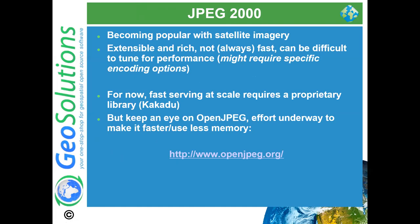JPEG 2000 is another common format, especially with satellite imagery. It's extensible and rich, but not always fast — it's more of a data transfer format. It can be fast if you buy a proprietary library called Kakadu, which is very good but quite expensive. There is an open source library that can decode JPEG 2000 and it's improving, but it's still a far cry from Kakadu at the moment.